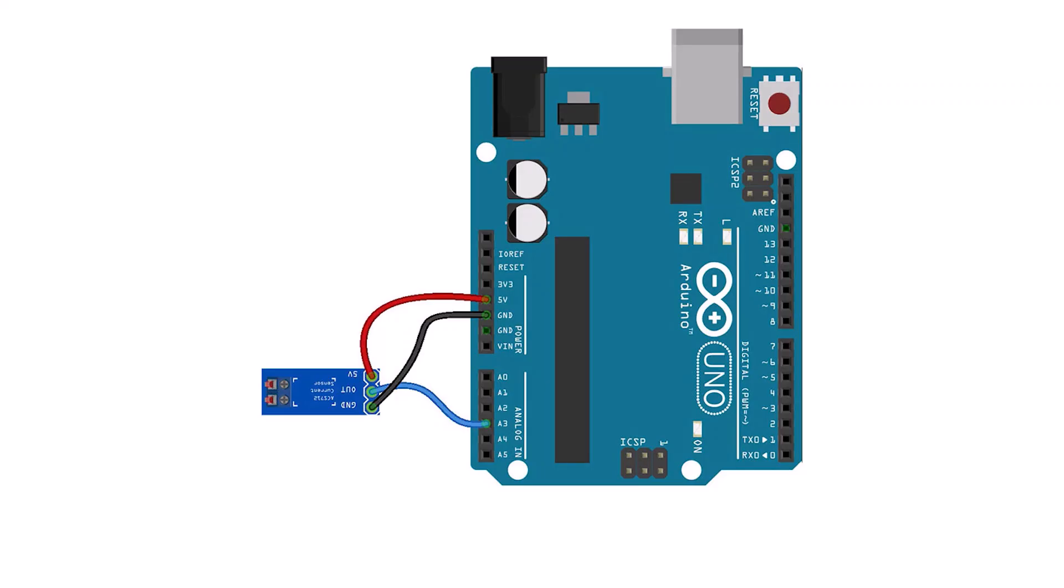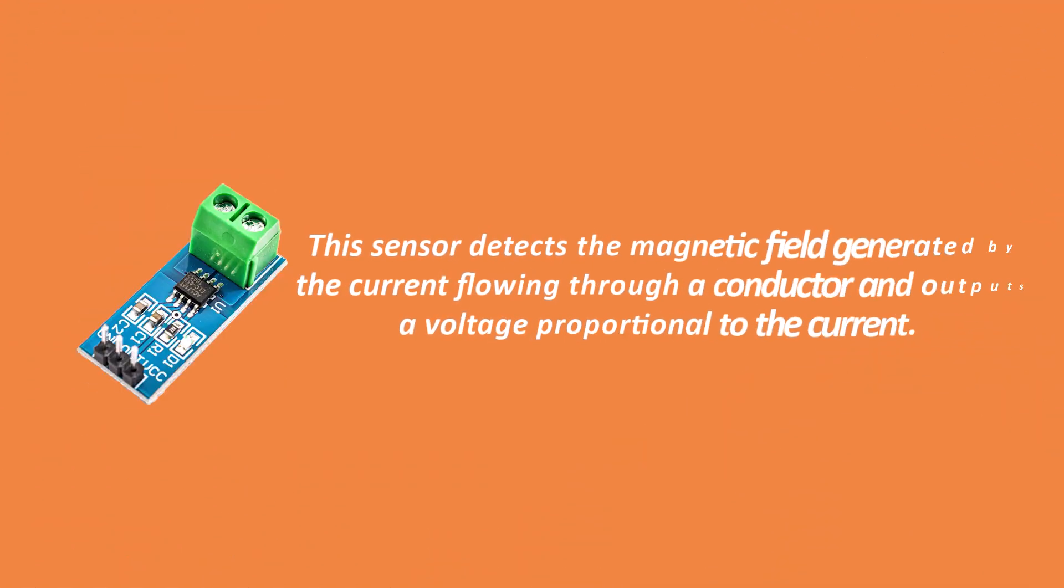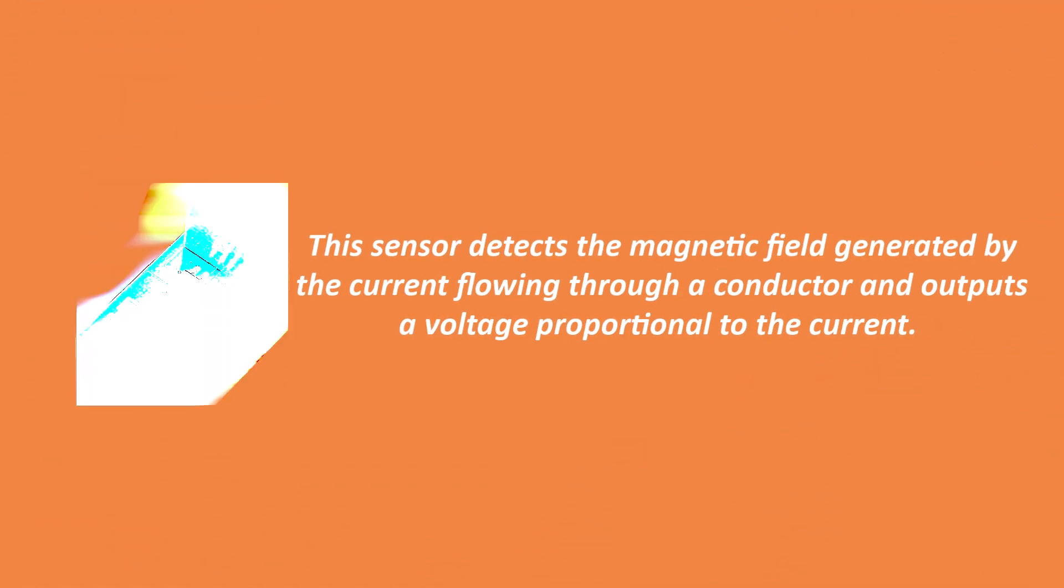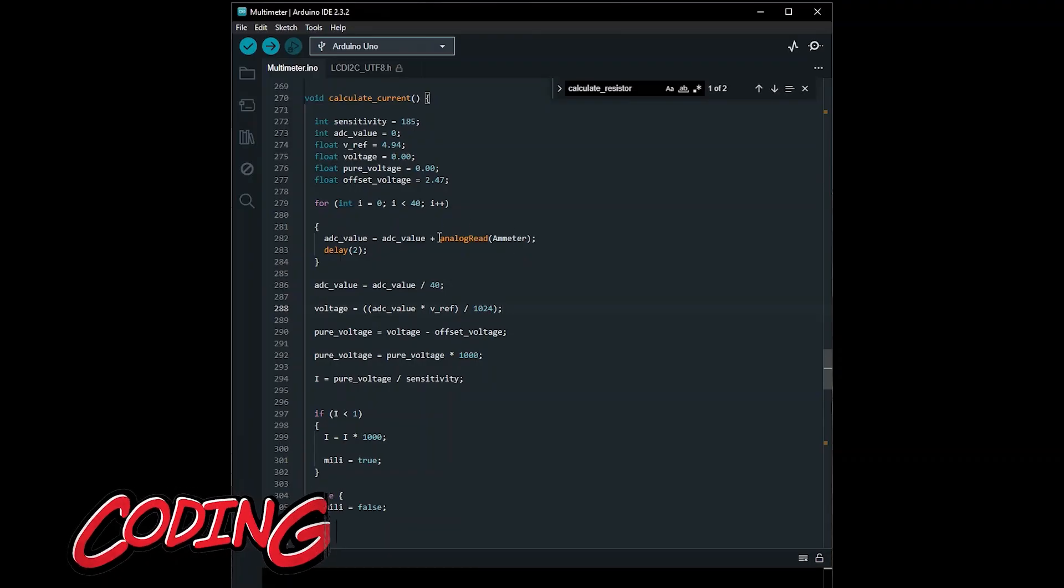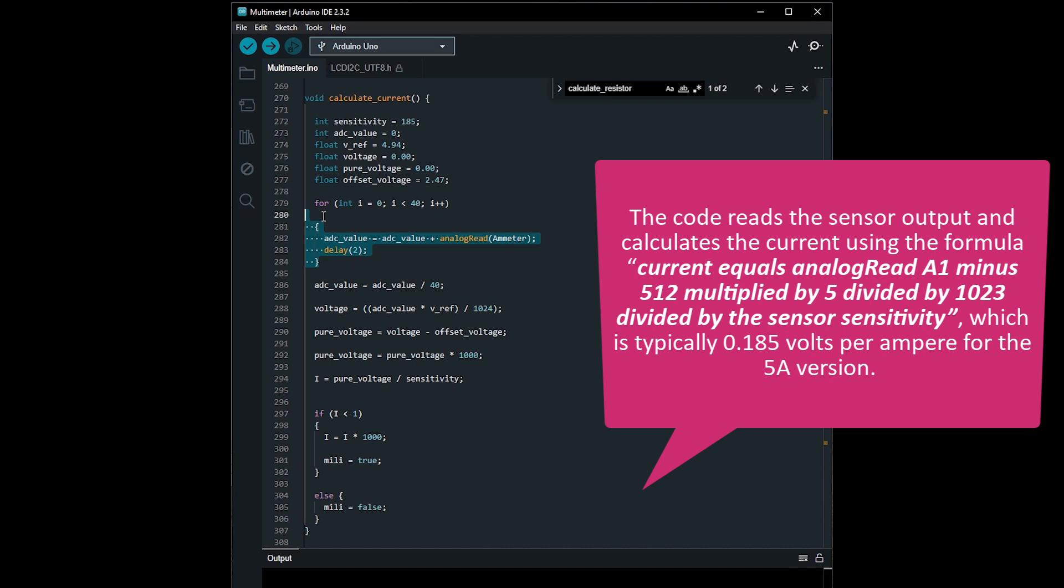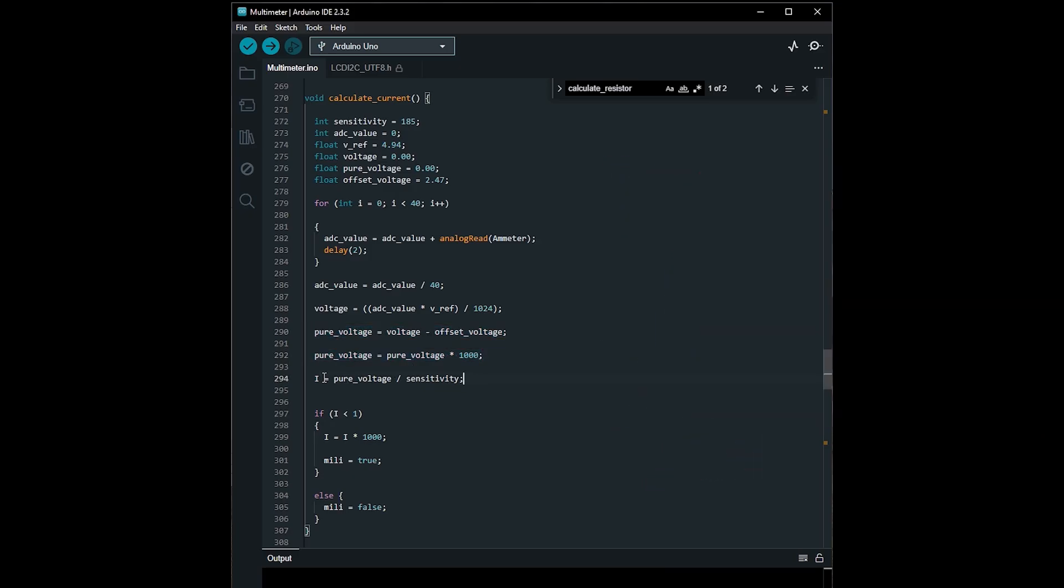The second method for measuring current involves using an ACS712 5 Ampere Hall effect sensor. This sensor detects the magnetic field generated by the current flowing through a conductor and outputs a voltage proportional to the current. The ACS712 is connected to the Arduino's analog pin A1. The code reads the sensor output and calculates the current circuit using the following formula, which is typically 0.185 volts per ampere for the 5 ampere version. This method is non-invasive and provides accurate current measurements without the need for a shunt resistor.